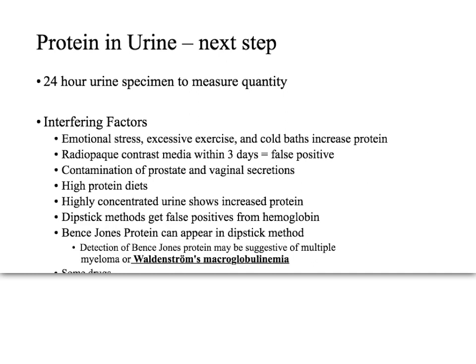When protein is found in the urine, the next step is to obtain a 24-hour urine specimen to quantify the amount of protein. This gives an indication of severity and is useful both when the diagnosis is known and as a general check on renal function.